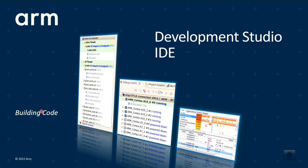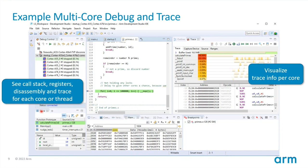In a single window you can debug multiple cores and even multiple devices and boards at the same time. You can click on each core and the context of what's happening changes — for example, memory windows, CPU registers, call stack, and trace information all update per core. If you click on a different core, say an A76 versus an A55, the memory and register views update to show what that core is seeing.